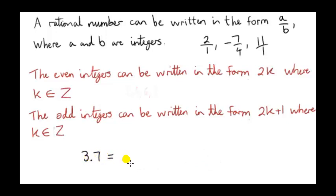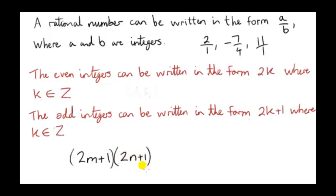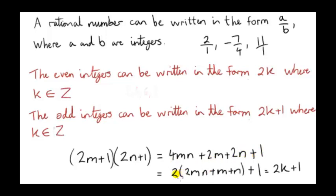Now we also know that if we multiply two odd integers together, we get an odd integer. Let's look at a proof of that fact. An odd integer can be written in the form 2m plus 1, where m is some integer, and we want to multiply this by another odd integer, 2n plus 1. So we get 4mn plus 2m plus 2n plus 1, which has the form 2 times k plus 1, where k is 2mn plus m plus n. The result is an odd integer — this is a proof that the product of any two odd integers is an odd integer.